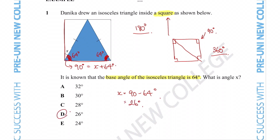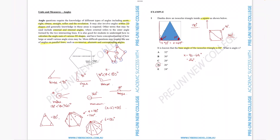So the correct response is option D. This question shows how important it is to understand how angles relate to different types of 2D shapes and their properties — knowing that allowed us to quickly find the answer. Those are all the techniques for angle related questions. Thanks everyone for watching.